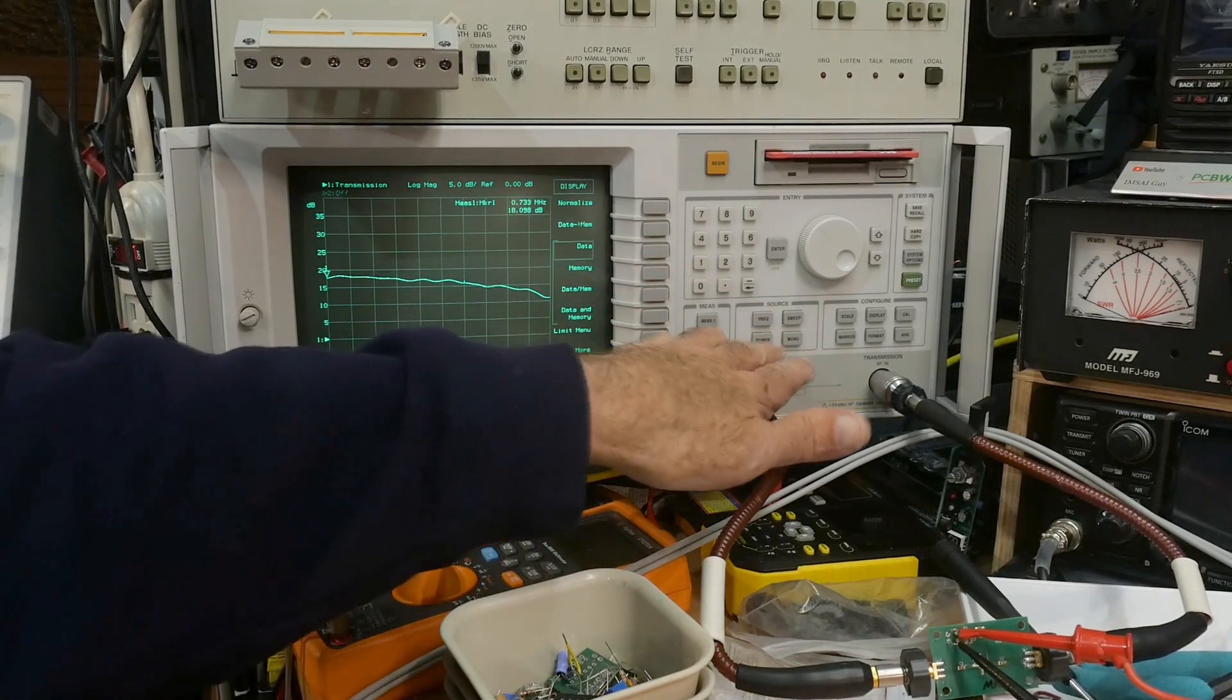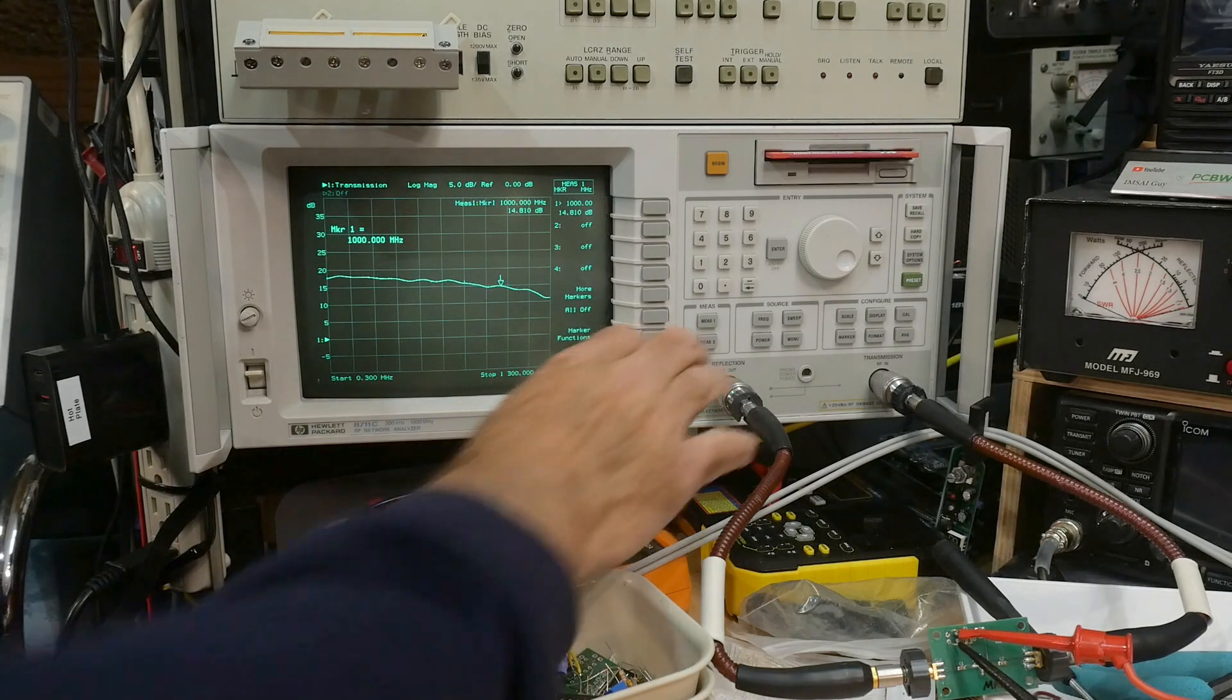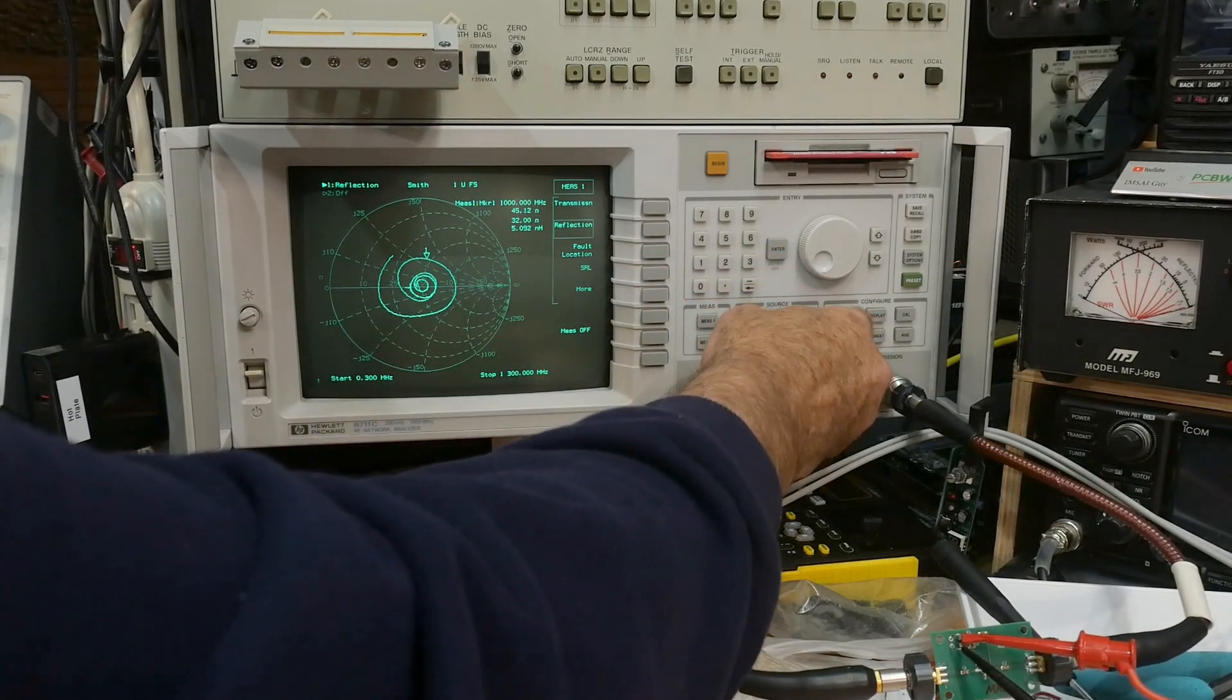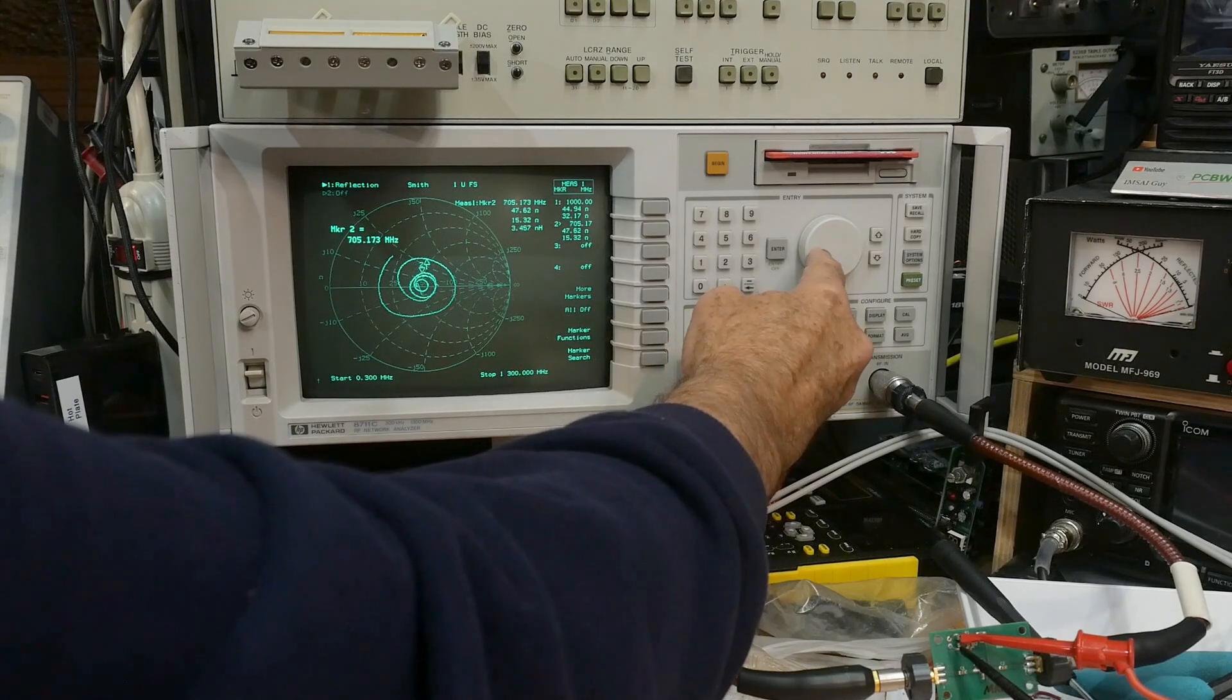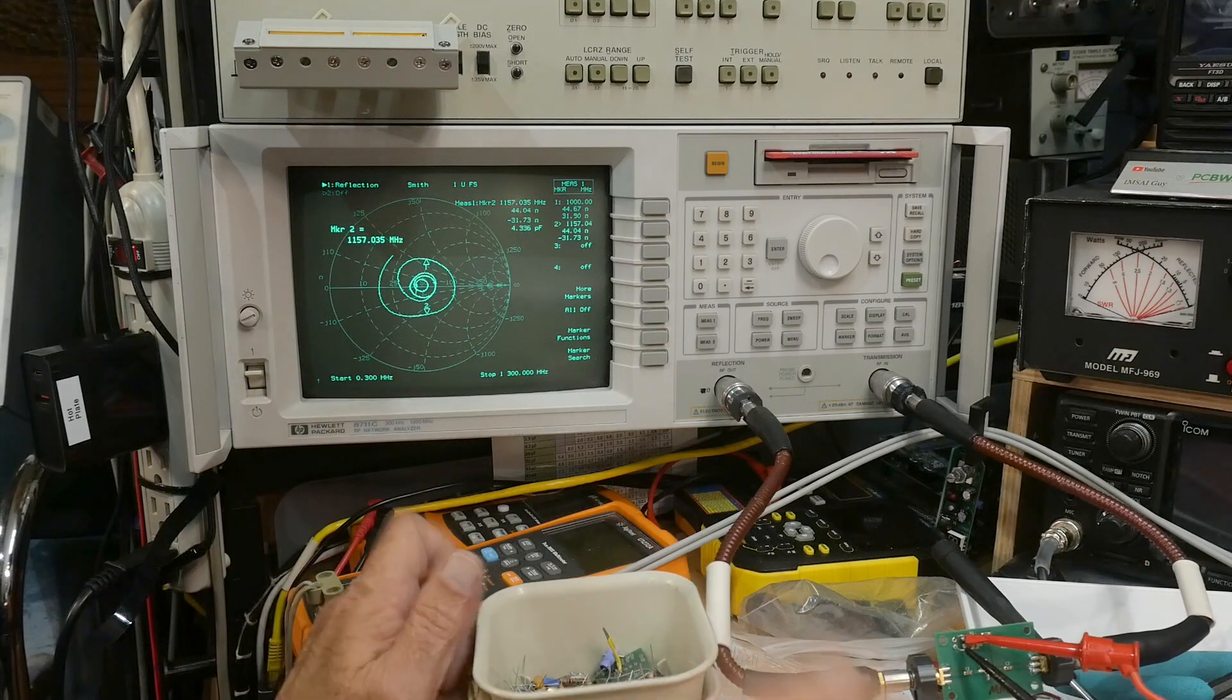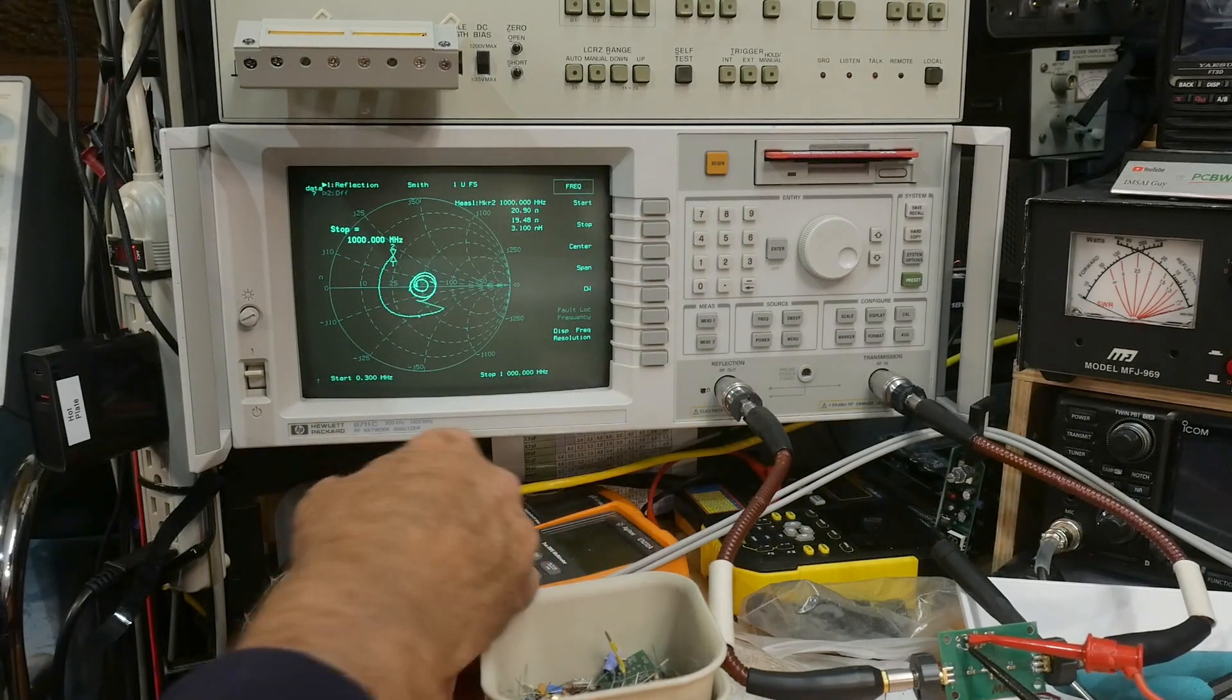Let's set a marker at one gigahertz. There we are. Looking good, and let's check the return loss. It's doing really good out here to around 900 megahertz, and then it kind of falls off after that. Let me just set the frequency stop at one gigahertz, and then we don't have to worry about all the markers and stuff.